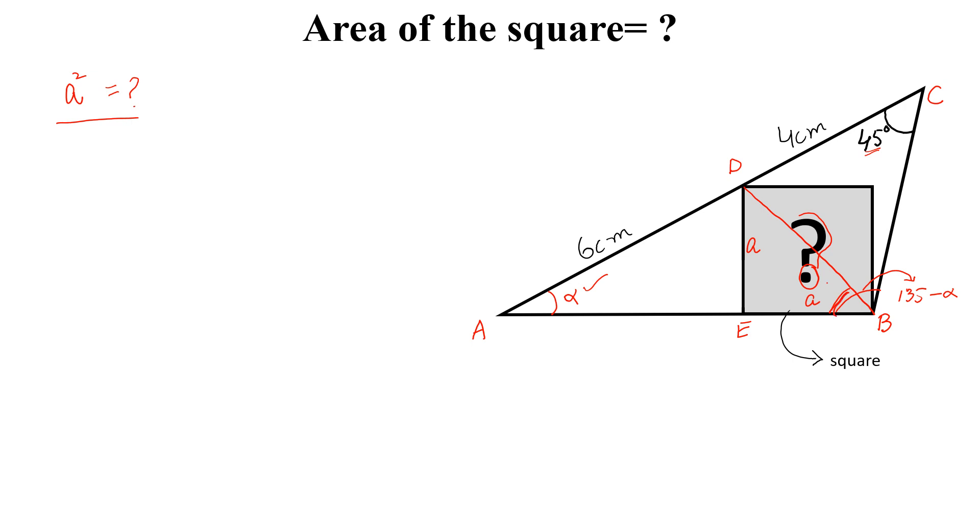So the triangles, triangle ABC and triangle ADB, these two triangles are similar. If they are similar, then we can write AB divided by 10 is equal to 6 divided by AB.